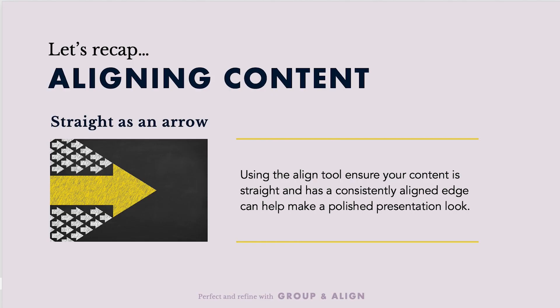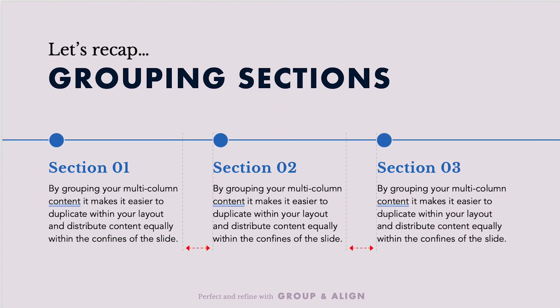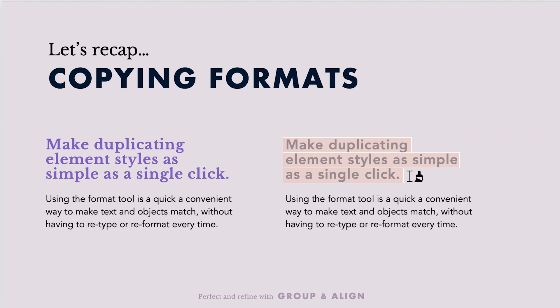All right, so we've covered aligning, grouping, and formatting. The Align tool can help put the finishing touches on your design presentation by keeping everything straight, even, and consistent. Smart Guides make designing a snap with its helpful indicators, allowing you to quickly see where your design elements should be placed when dragging them around the slide. You can group related sections of content to make moving and aligning them easier, and ensure elements like headings and body copy stay together. And finally, using the Format Painter can take a load of time off formatting — simply design one and paint that style onto the rest.